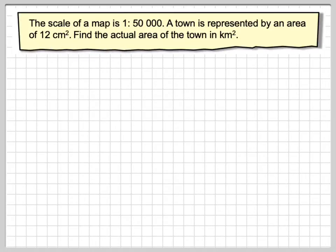The scale of a map is 1 to 50,000. A town is represented by an area of 12 cm². Find the actual area of the town in km².